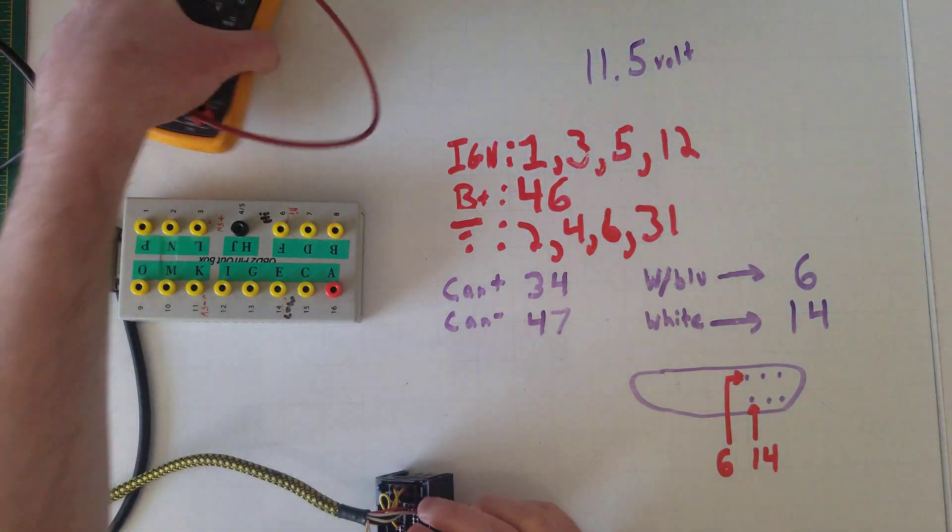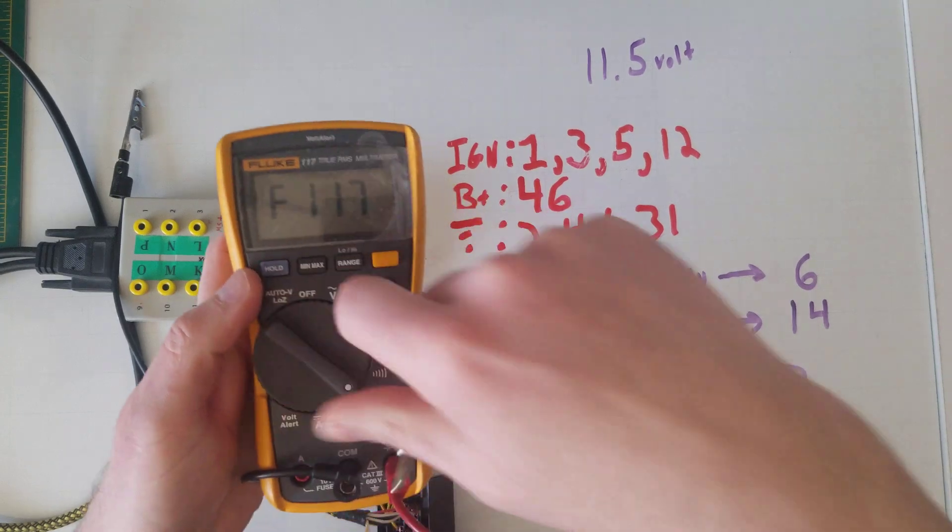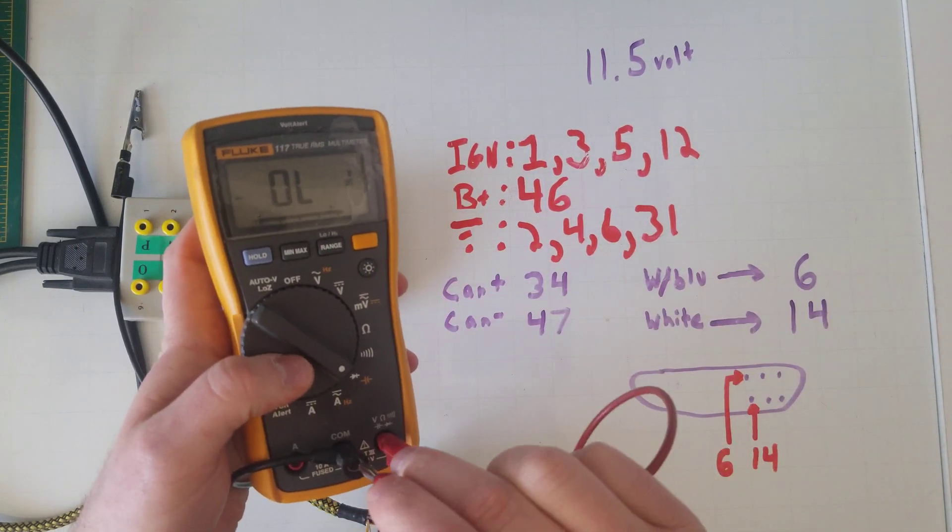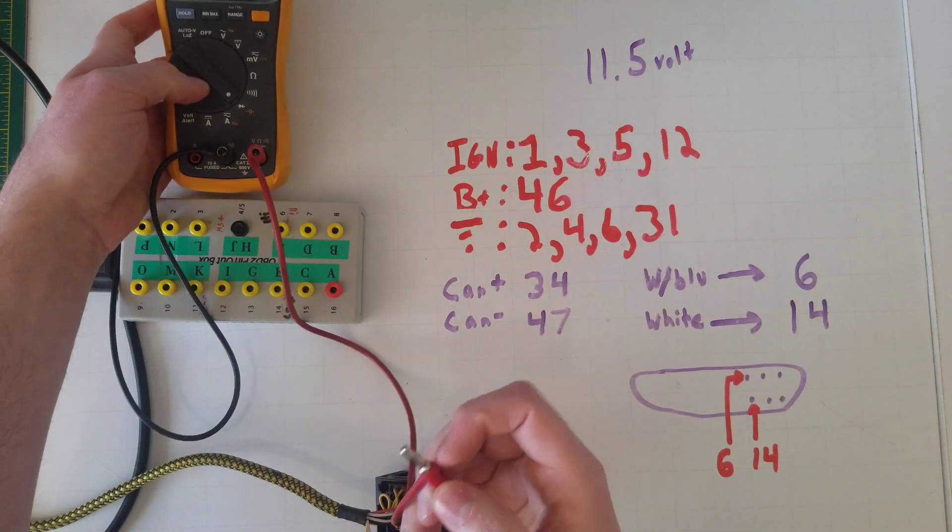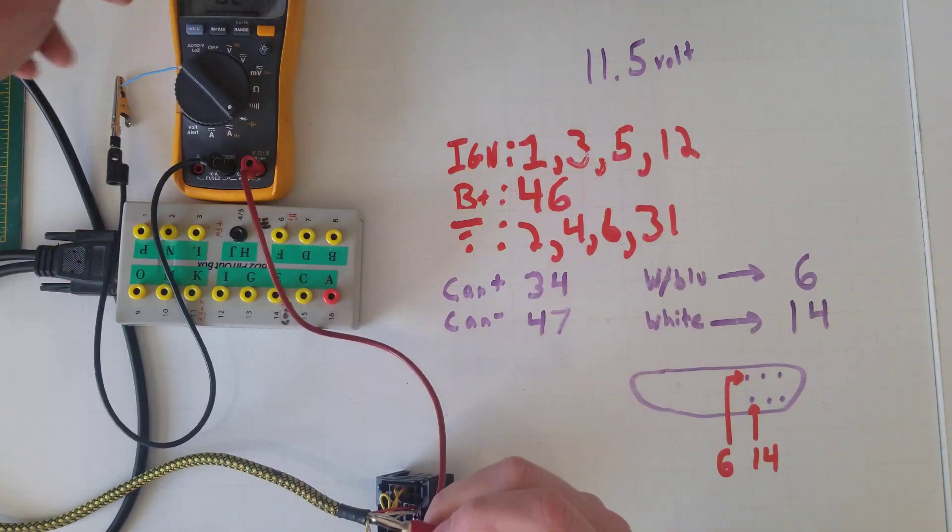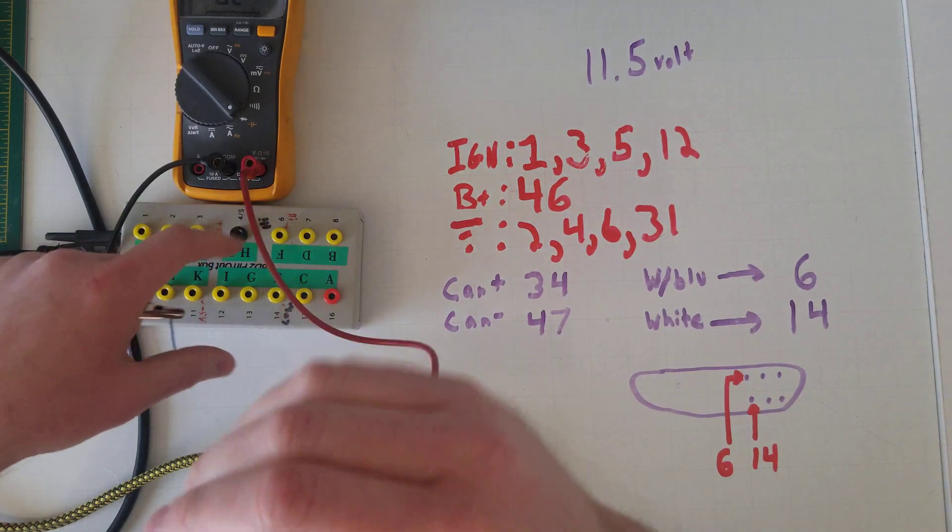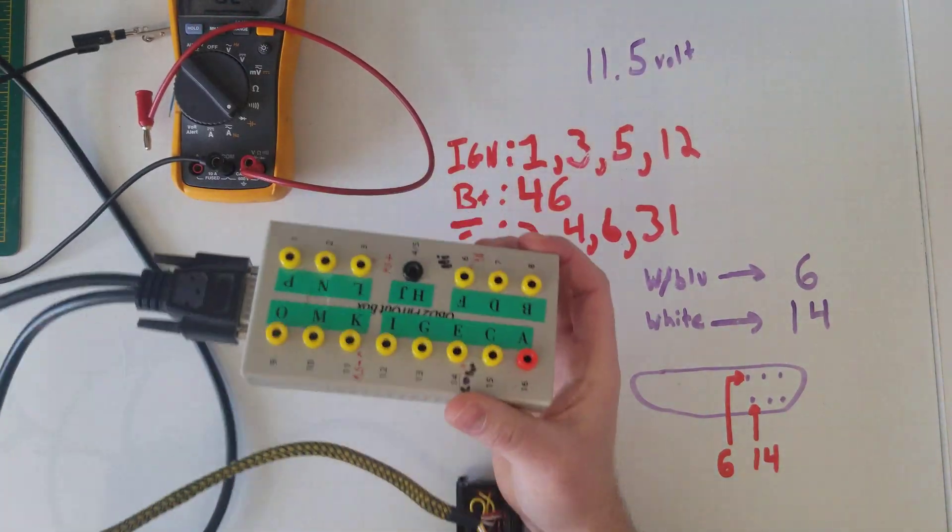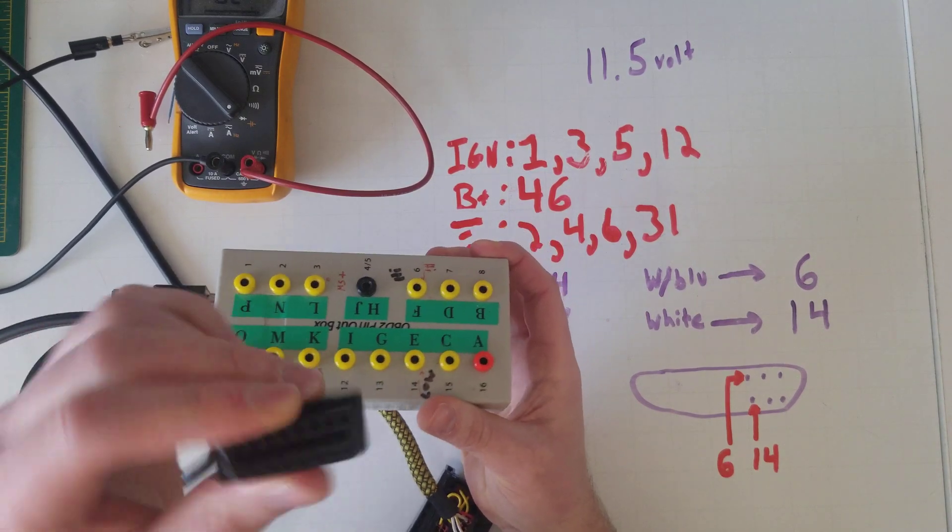You're gonna need a multimeter with a diode or continuity mode, and that's the mode that makes the beeping when you make sure the wires are connected. We're not worried about resistance at the moment, we just want to see if we can get some continuity beeping. This thing also is a breakout box for the OBD2, it makes it easier on me.